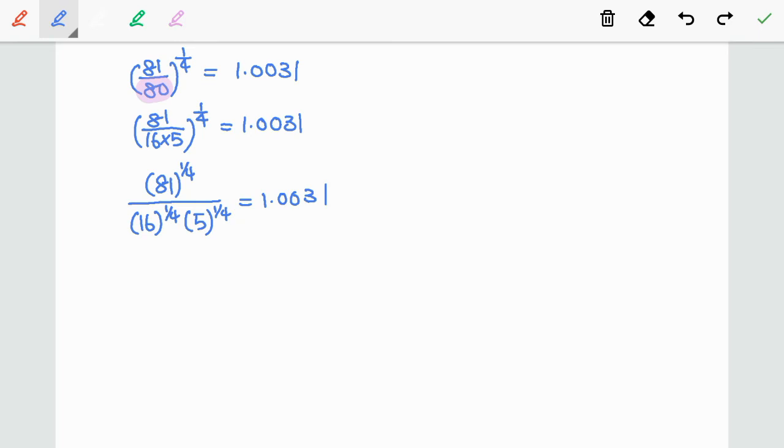So, 81 to the power of 1/4 is 3. 16 to the power of 1/4 is 2. And 5 to the power of 1/4, we can rewrite it as fourth root of 5.